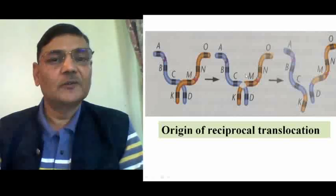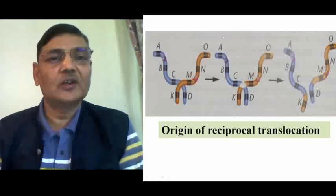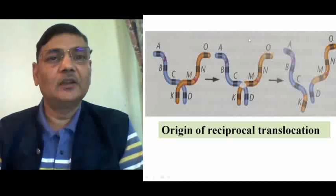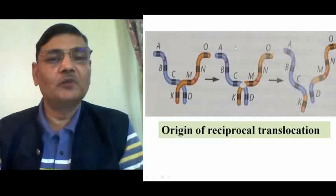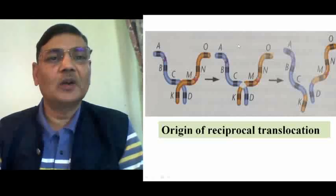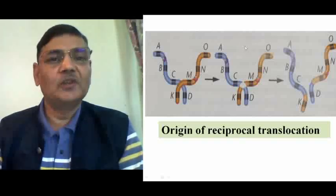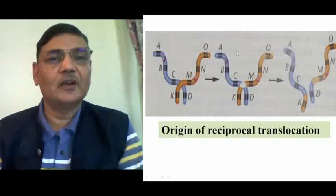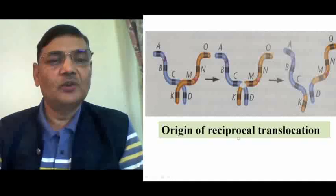Now I will discuss the consequences of being a translocation heterozygote. As mentioned, if two non-homologous chromosomes are normal and the other two chromosomes of the same type carry translocation, then such an individual is a translocation heterozygote. We can understand what would be the consequence of this kind of chromosome complement, which is applicable to every kind of organism, whether plant or animal. We can examine the origin of reciprocal translocation specifically.